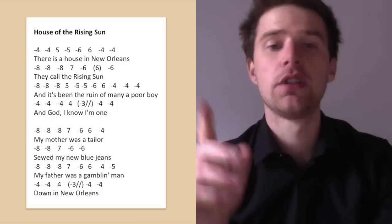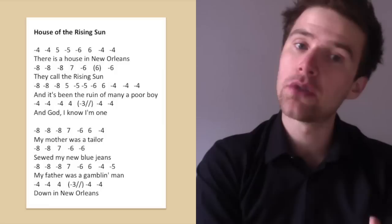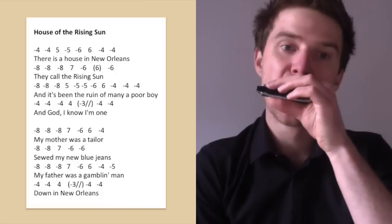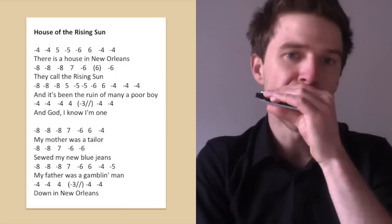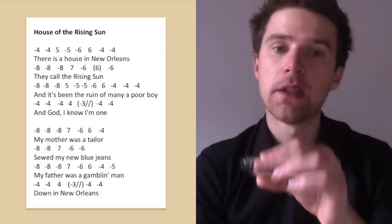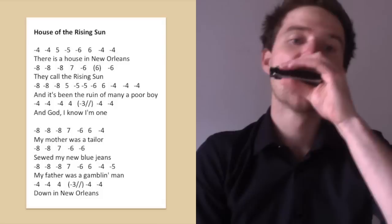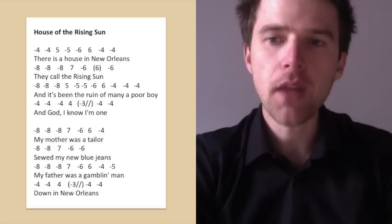And the final line, 'down in New Orleans': four draw, four draw, four blow. And then again, you could play the second bend on three, four draw, four draw. So the simpler version. Or you could play with that three draw second bend. Or you could replace that penultimate note with a four blow. So you could go four, three draw second bend, four blow, four draw. That would be a nice way to finish. You've got that run up. Quite nice.